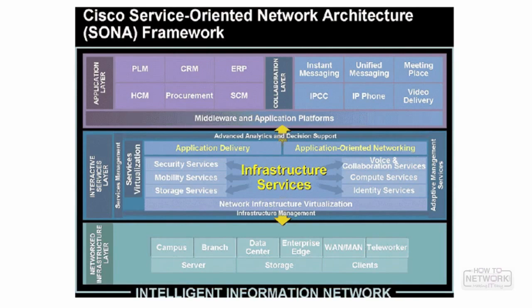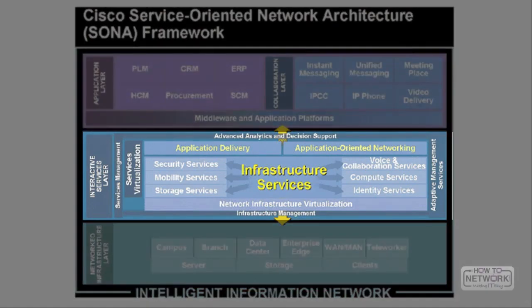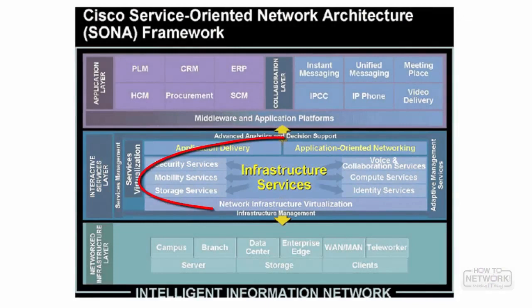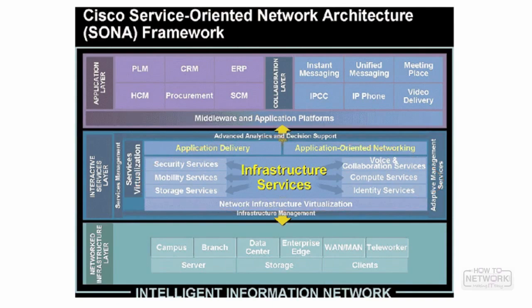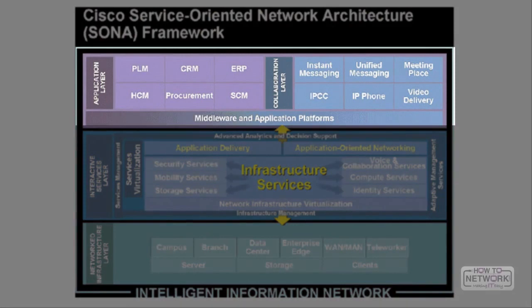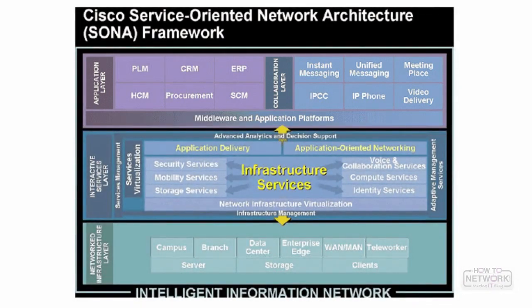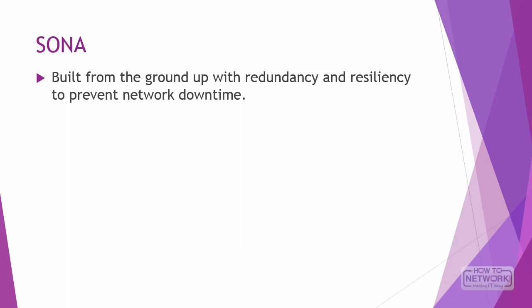The Interactive Services Layer, also referred to as the Core Common Services Layer, optimizes communication between applications and services using intelligent network functions such as security, identity, voice, virtualization, and QoS. The Application Layer contains the business and collaboration applications used by end users, including commercial and internally developed applications such as software as a service and composite applications within the service-oriented architecture. The SONA network is built from the ground up with redundancy and resiliency to prevent network downtime.